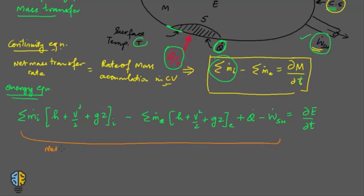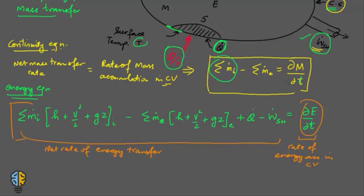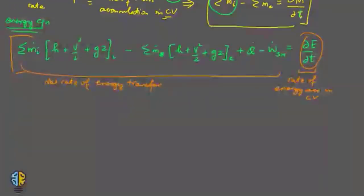This whole expression represents the net rate of energy transfer. Due to this net rate of energy transfer, there is some energy accumulation within the control volume — that is delta E upon delta t. This was the application of the first law.